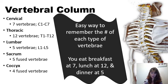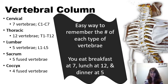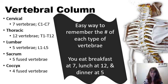The vertebral column includes seven cervical vertebrae in the neck, 12 thoracic vertebrae, five lumbar vertebrae, the sacrum, and the coccyx. The sacrum is made up of five fused vertebrae and the coccyx is formed from four fused vertebrae. An easy way to remember the number and type of each vertebra: you eat breakfast at 7, lunch at 12, and dinner at 5.